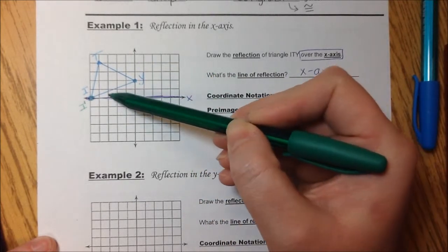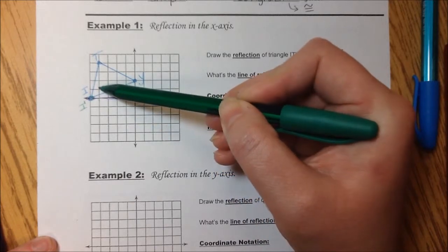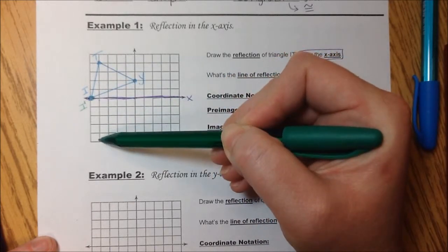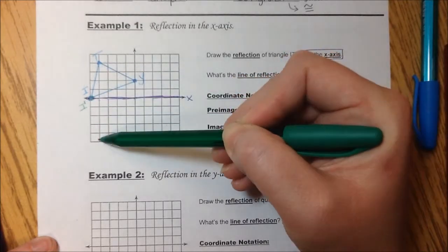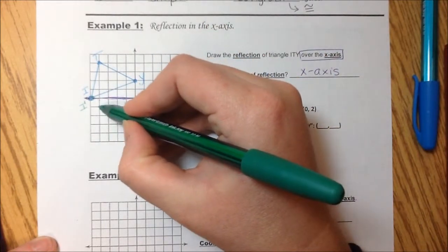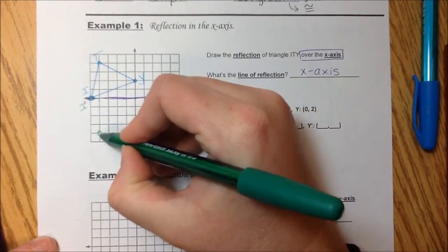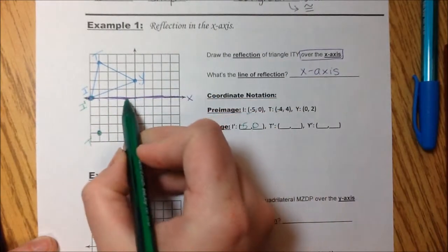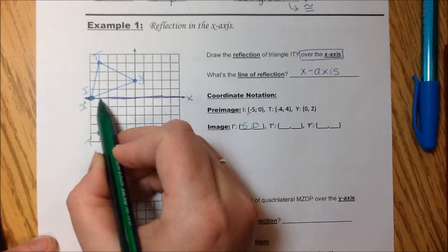T, we went 1, 2, 3, 4. And then up 1, 2, 3, 4. So we're still going to be on the same here. But now we're going to flip it. So it's going to be down here. So 1, 2, 3, 4. I'm going to have the same distance. 1, 2, 3, 4. So T prime is negative 4, negative 4.